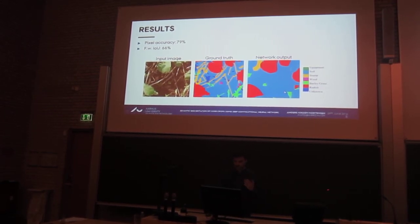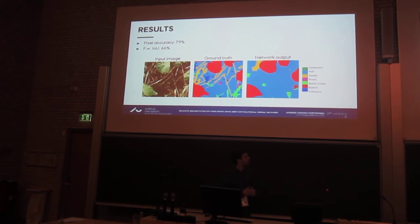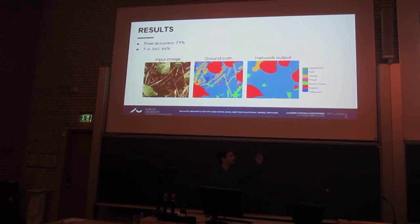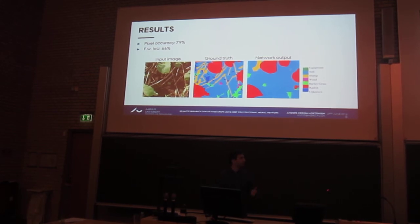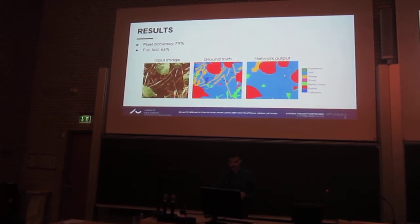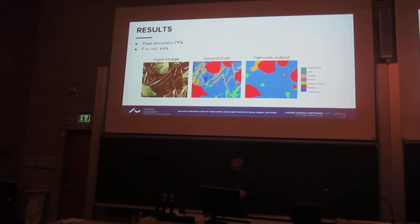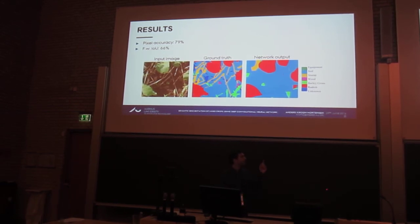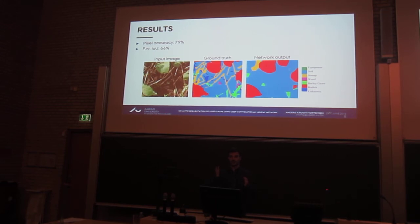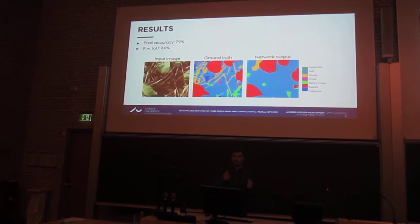The really fine details are not captured well, and this gives us a pixel accuracy of 79%, which is mainly caused by the large grass leaves and the soil. The thing to remember here is that the network, because of the pooling layers, downsamples everything by a factor of 32 in total.